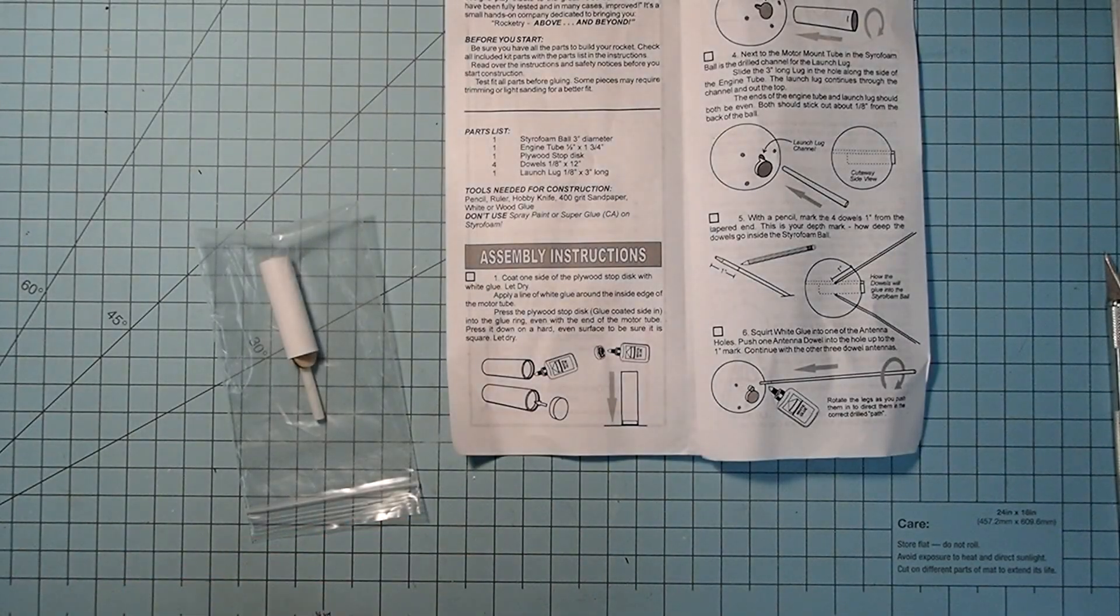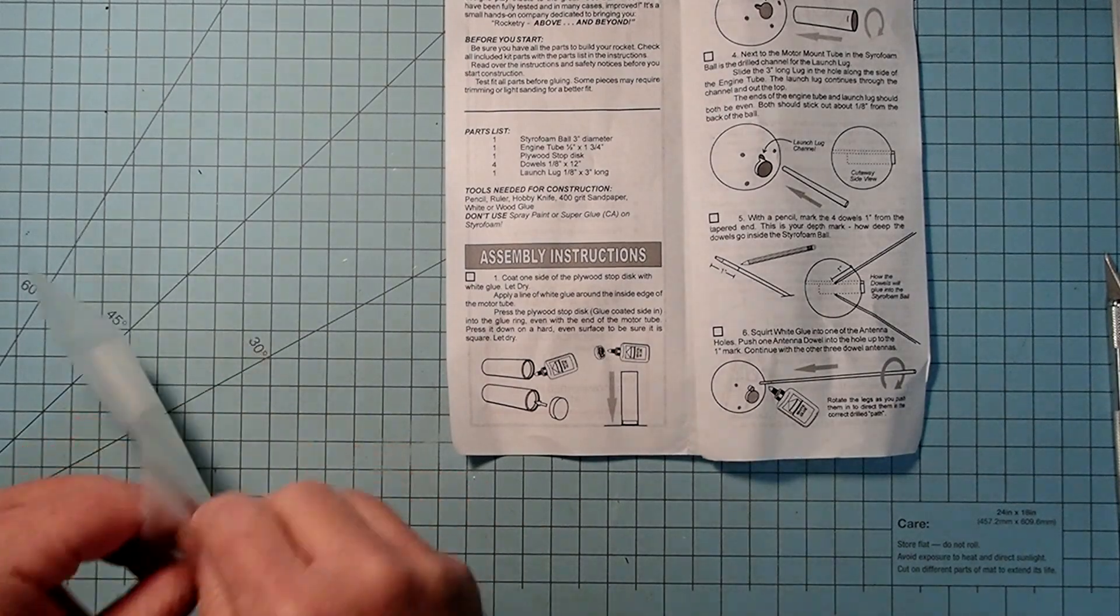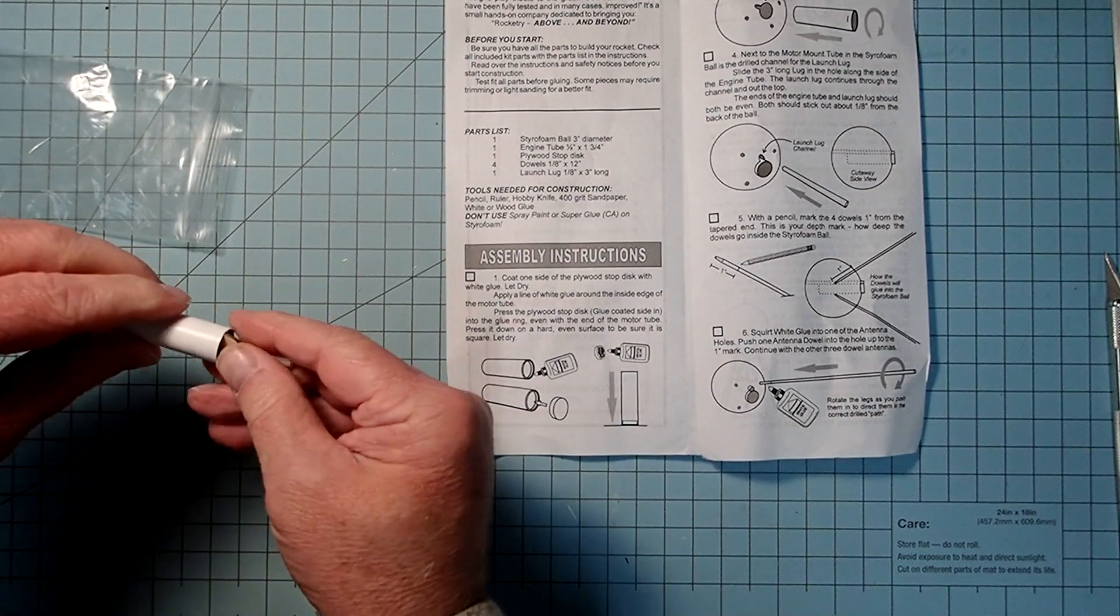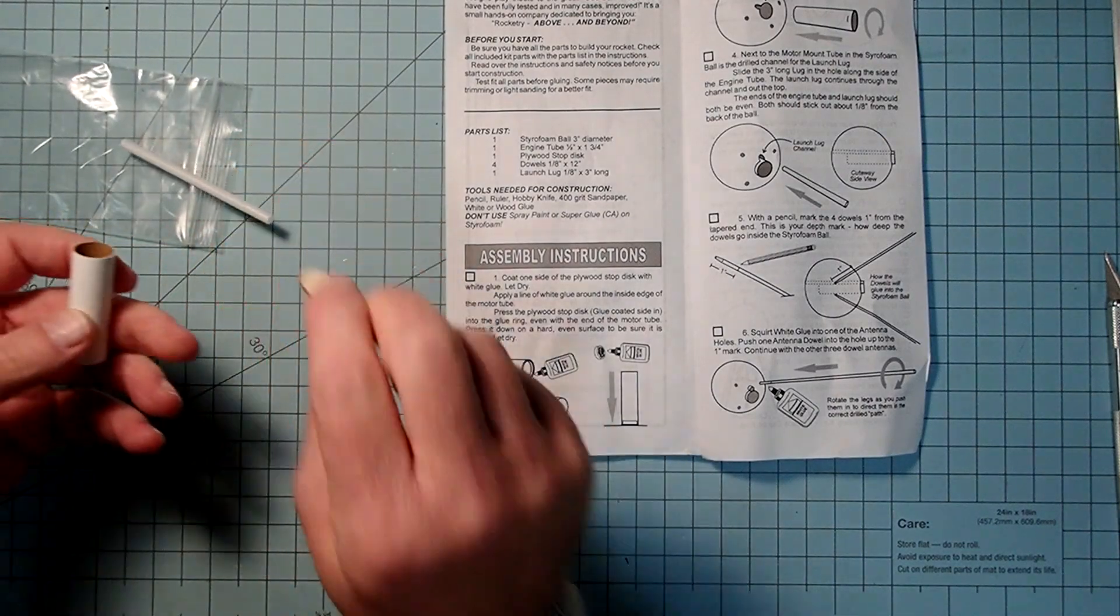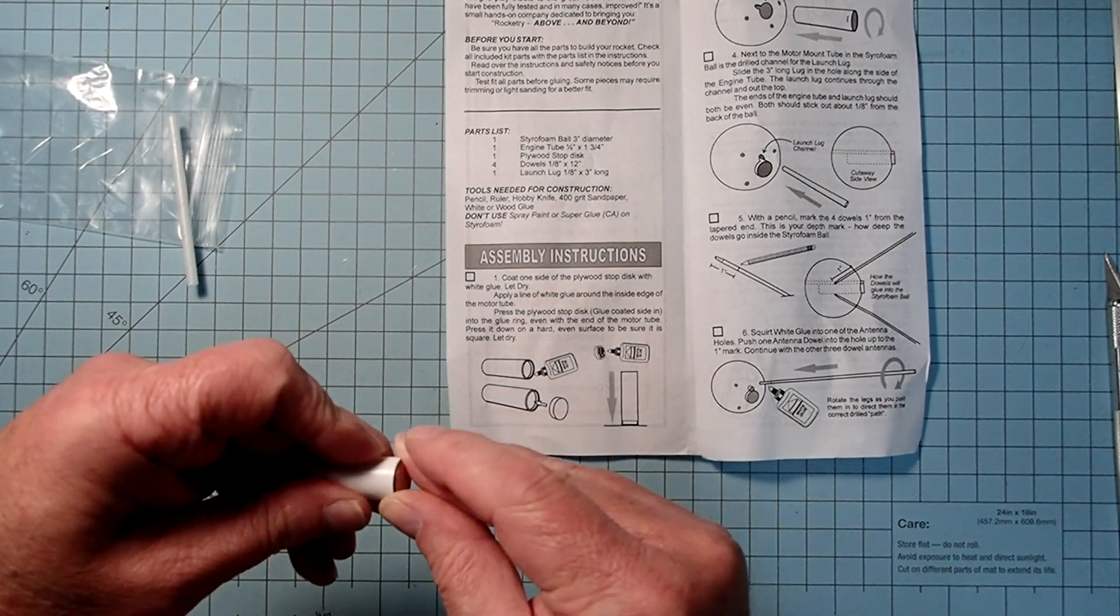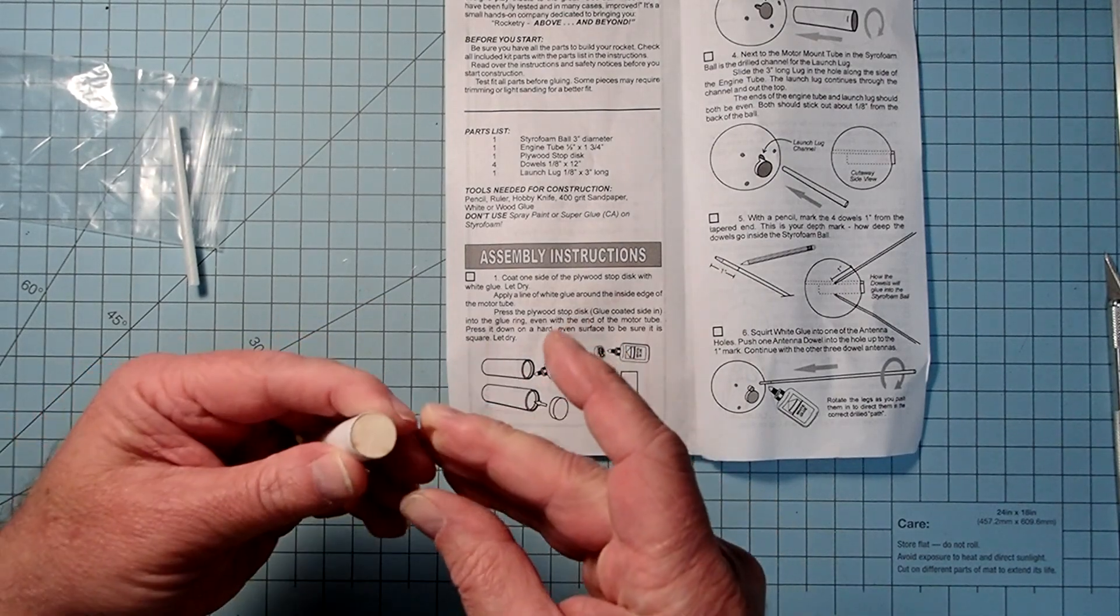Now according to the instructions, our first task is to glue in the stop disc or engine block here. And this is just this little plywood disc and this is going to fit flush in the engine mount like that.